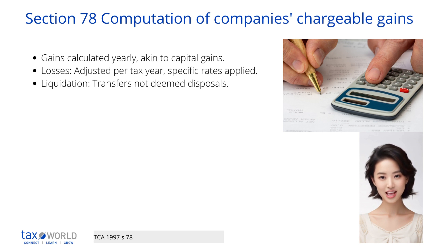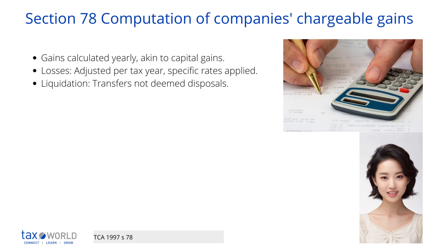The net chargeable gains of a company for an accounting period are taxed after subtracting the losses that are allowed for that period and any losses carried forward.